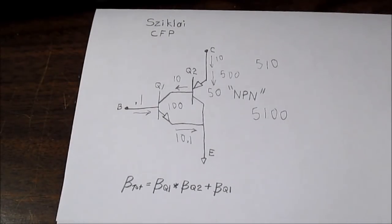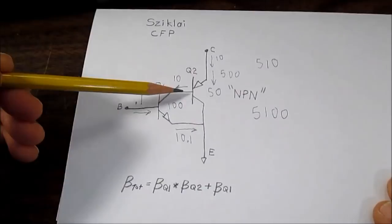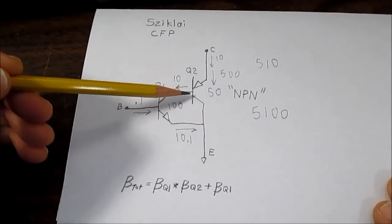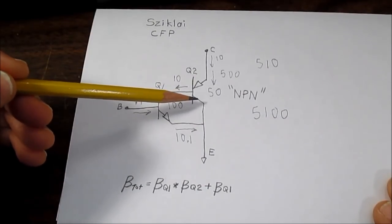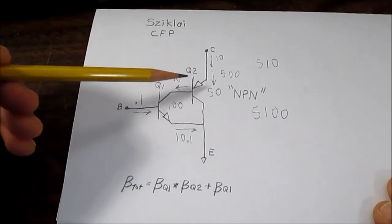Just like with the Darlington configuration, Q2 cannot saturate. And the reason is similar. If Q2 is in saturation, the collector voltage can actually be lower than the base voltage.